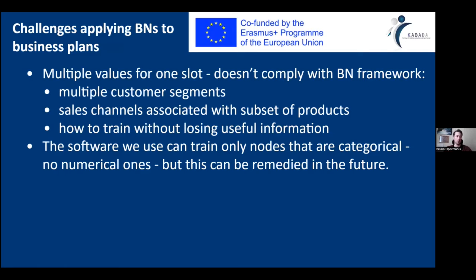One of the most challenging parts was that the Kabada business form doesn't really comply with the Bayesian network framework, because of the possibilities to have multiple customer segments. Also, some value propositions or products are directly associated with some of the customer segments. How to handle this situation, and also how to train without losing useful information from all of the completed slots.